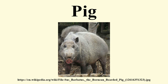Description and Behavior: A typical pig has a large head with a long snout which is strengthened by a special pre-nasal bone and by a disc of cartilage at the tip. The snout is used to dig into the soil to find food and is a very acute sense organ. There are four hoofed toes on each trotter, with the two larger central toes bearing most of the weight, but the outer two also being used in soft ground. The dental formula of adult pigs is 3.1.4.3 / 3.1.4.3, giving a total of 44 teeth. The rear teeth are adapted for crushing.